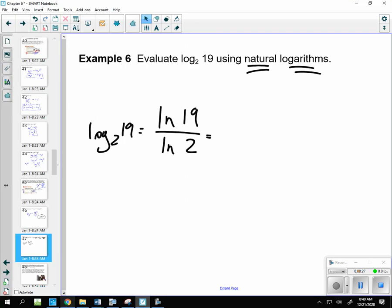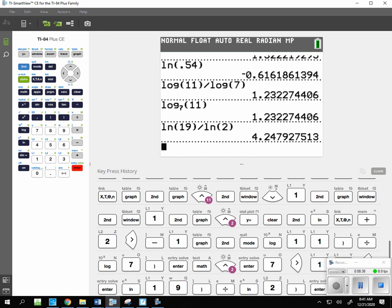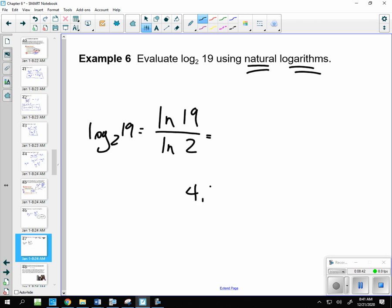So let's go back over here and get a graphing calculator. Natural log of 19 divided by natural log of 2. So natural log 19, close the parentheses, divided by natural log of 2. And, again, this is 4.2479. 4.2479 is the correct answer.